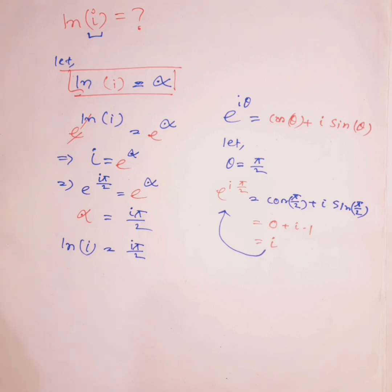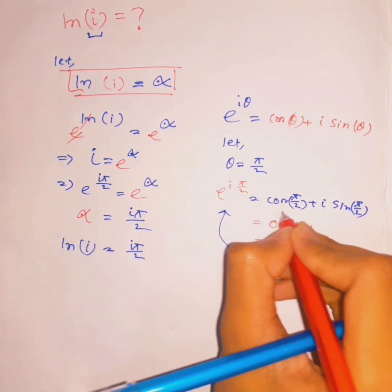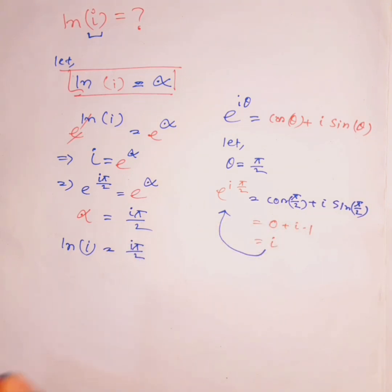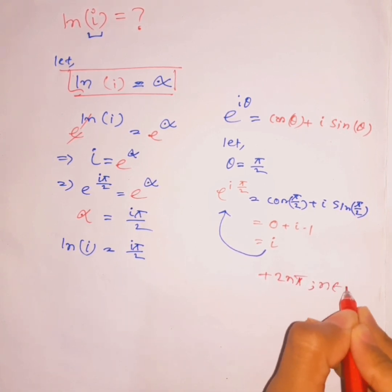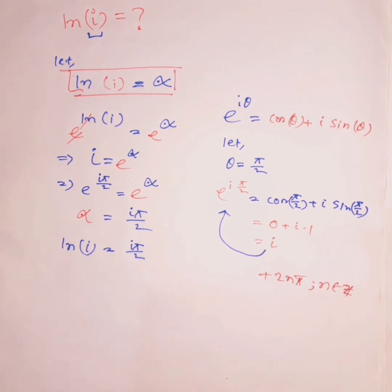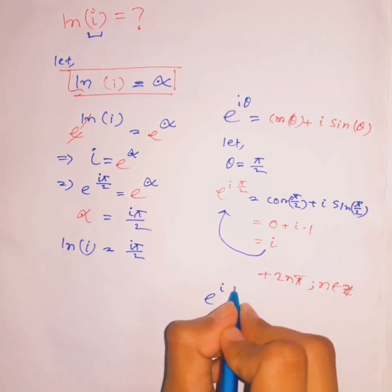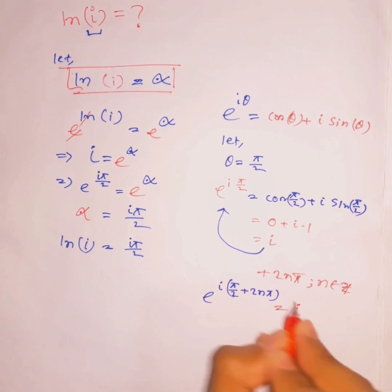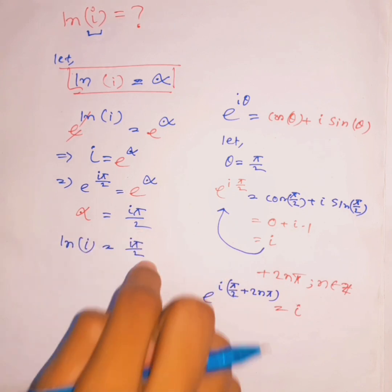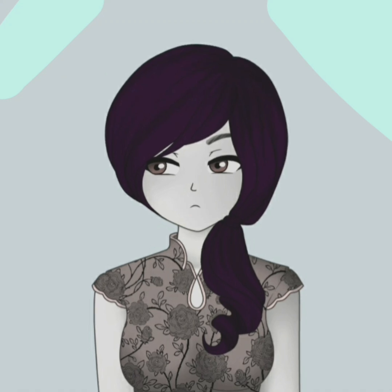This is only one solution for ln(i), because cosine and sine are both periodic functions. You can add 2nπ where n belongs to the integers every time and get the same value, giving all the general solutions for ln(i). You can work that out yourself — give it a try!